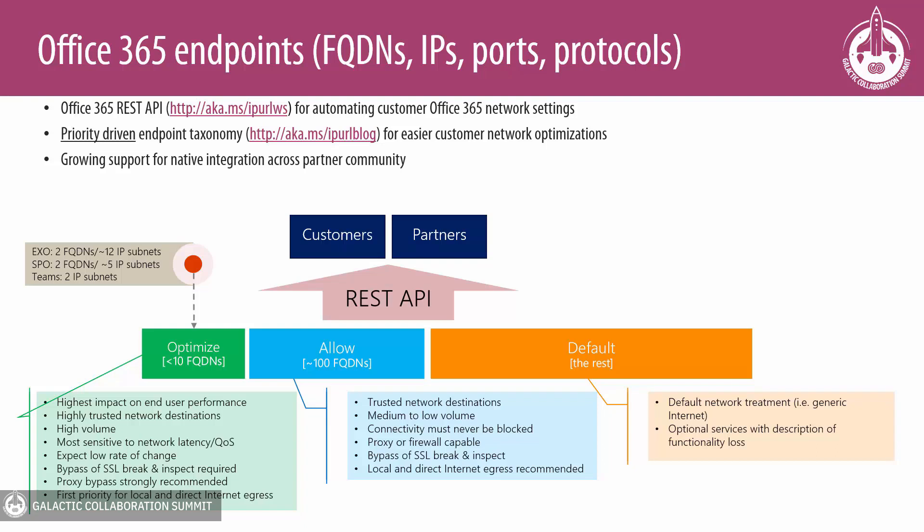These optimized endpoints are the most important, with less than 10 FQDNs and the IP addresses behind them. On the other end of the spectrum, the default category of endpoints doesn't require any special treatment — they can be directed to your default internet egress location, proxy servers, or routed through backhaul, the same as a URL a user types freshly into a web browser. They represent a small amount of the overall network traffic that Office 365 uses, so it's not very impactful.